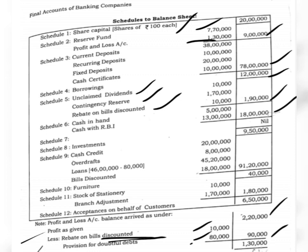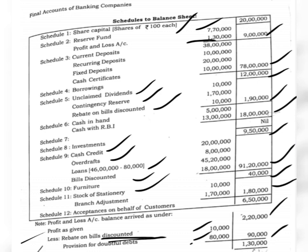Note number 8 is investments: 9,50,000. Note number 9 is advances. Under that we show cash credits 20,00,000, overdrafts 8,00,000, and loans — from the loan amount of 46,00,000 we deduct the provision for doubtful debts, leaving 45,20,000. Bills discounted 18,00,000. Total of note number 9, that is advances, comes to 91,20,000. Note number 10 is fixed assets — we are given only furniture amounting to 40,000. Note number 11 is other assets: stock of stationery 10,000 and branch adjustments with a debit balance 1,70,000, together 1,80,000.